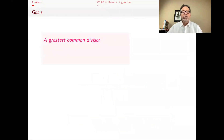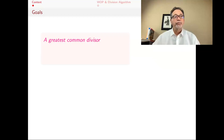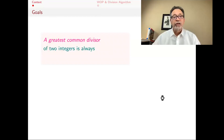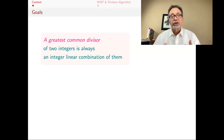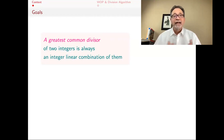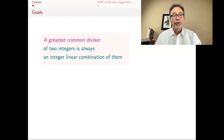Our goal is to prove one thing: that a greatest common divisor of two integers is always an integer linear combination of them. I will tell you what a greatest common divisor is, and then for two integers, as long as one of them is not zero, I will show that it's an integer linear combination of the two. This is not an obvious fact, and it's a very useful one used in elementary number theory, group theory, and ring theory all the time.